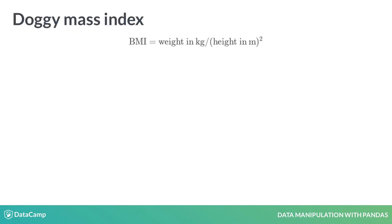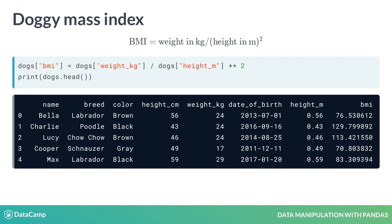Let's see what the results are if we calculate the body mass index, or BMI, of these dogs. BMI is usually calculated by taking a person's weight in kilograms and dividing it by their height in meters, squared. Instead of doing this with people, we'll try it out with dogs. Again, the new column is on the left-hand side of the equals, but this time our calculation involves two columns.